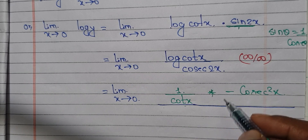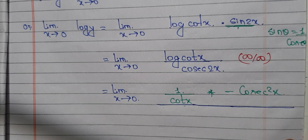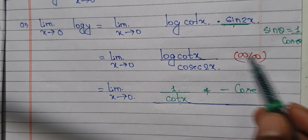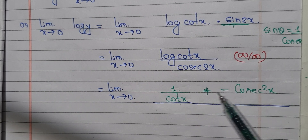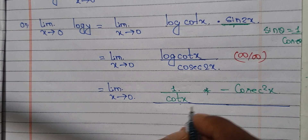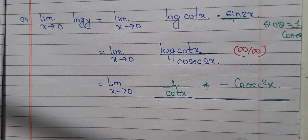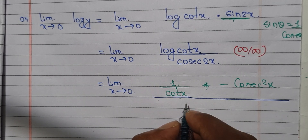We are going to take the problem and we will take the value as 1 by something. You can use different colors and you can easily understand this, and you can use cos.